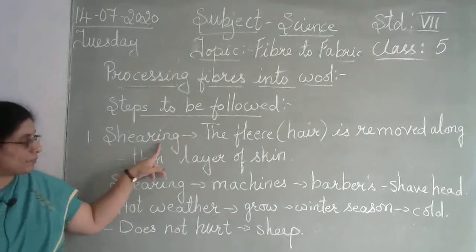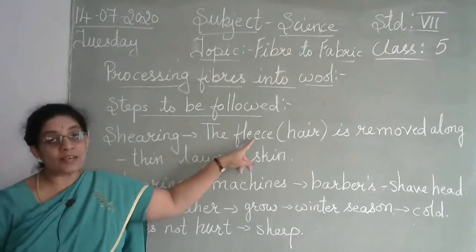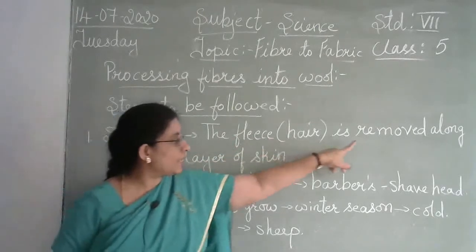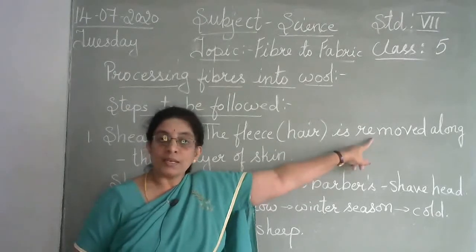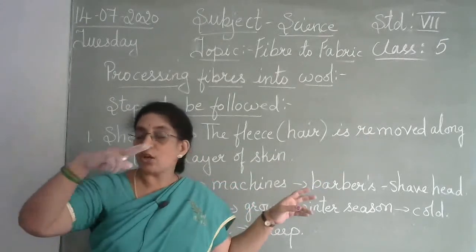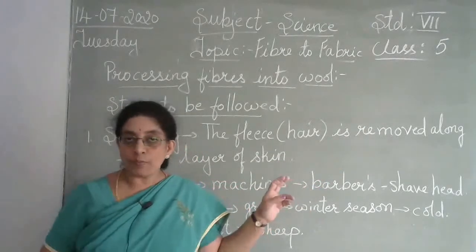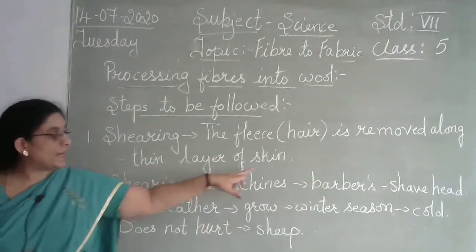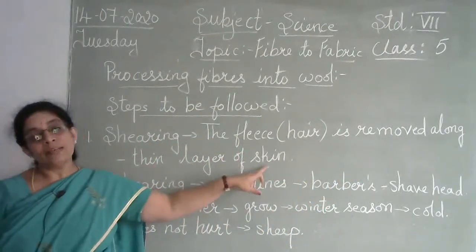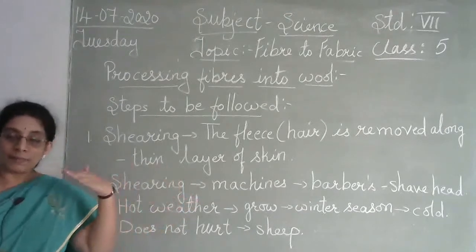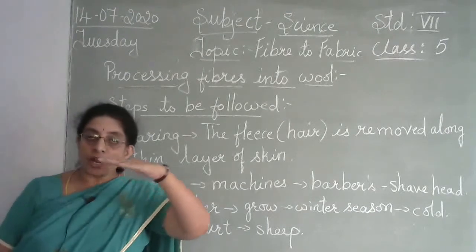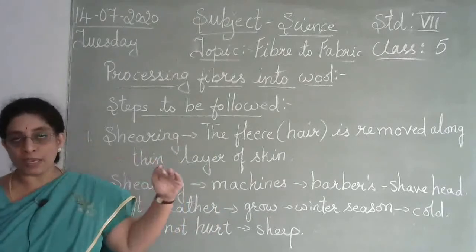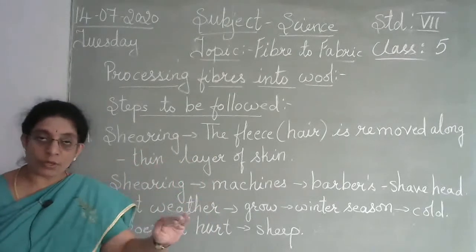Shearing means removing the fleece from the animal. It is not cut only at the top — it is cut along with a thin layer of skin. So from the animal's body, the thin top layer of skin is removed along with the hair.